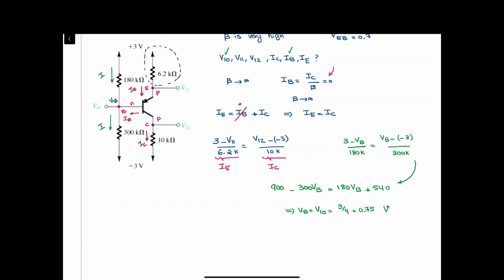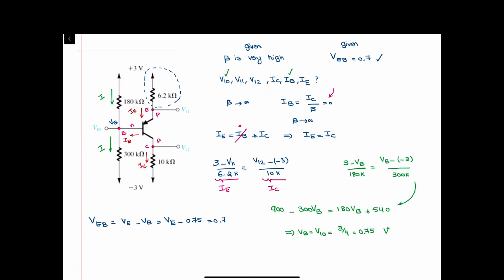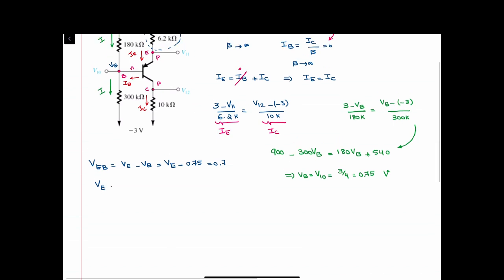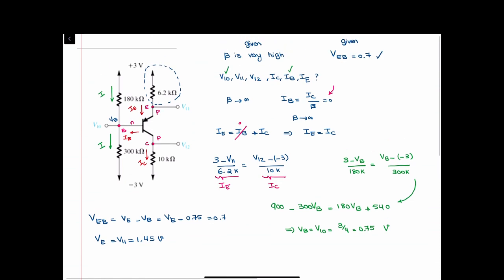Now that we have V10, we have VB = 0.75V, and VEB was given. VEB equals VE minus VB, so 0.7 = VE - 0.75, therefore V-emitter, which is also V11, equals 1.45 volts.